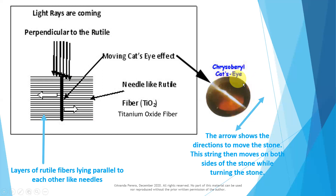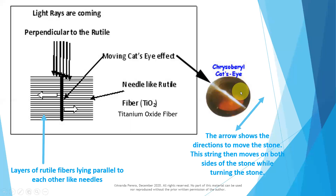This stone is chrysoberyl — not the corundum family. This is the chrysoberyl family. The next lesson, next part, we are learning this. The cat's eye effect is this. This is the physics we have to understand. Shall we move to the next?